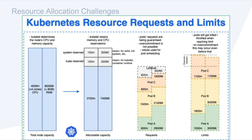If resource allocation is such an issue, what are companies currently doing? Let's jump into how companies solve this issue today by manually profiling each application. Profiling is the process of gathering information about a program's behavior as it executes. You profile an application to determine which areas can be optimized to increase overall performance, reduce resource usage, and ensure stability. Application profiling tools help to simplify this process.